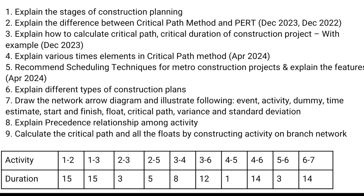Unit five is construction planning. The first question is stages of construction planning — job planning and execution planning. The second question is the difference between Critical Path Method (CPM) and PERT (Program Evaluation and Review Technique). Next, how to calculate the critical path and critical duration — the critical path is the maximum duration path in the network. Various time elements are used to find the critical path.